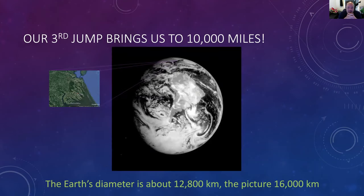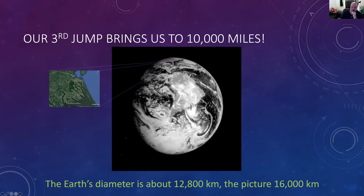Our third jump brings us to basically 10,000 miles, or 16,000 kilometers — and the Earth's diameter is 12,800 kilometers. So 16,000 kilometers is roughly the width of that photograph, and the Earth's picture takes up a good fraction of it. There's Florida down there, and the North Carolina-Virginia coast right there — showing you roughly where we just came from. This photo probably doesn't look like one you've seen before — it's got different colors almost like they took it at night, but we can still see the sky, clouds, and continent. We can see South America, Mexico, the Yucatan Peninsula, the Gulf, and Florida.